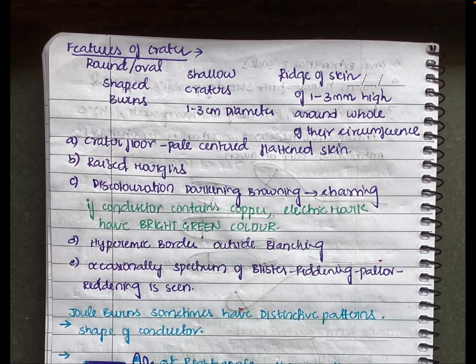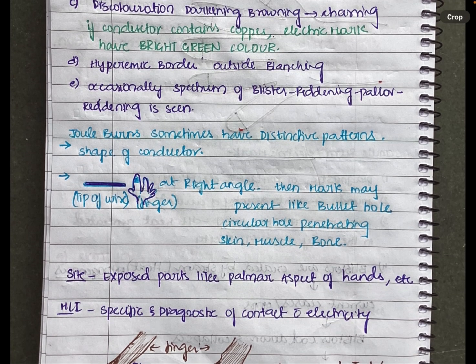Surrounding the raised margins, there is discoloration or darkening — browning of the skin. If the current passes for a longer time, it will turn into charring. If the conductor contains copper, the electric mark will have a bright green color instead of brown. Outside the discoloration there is a hyperemic border, and occasionally a spectrum of blister, reddening, pallor, and reddening is also seen.